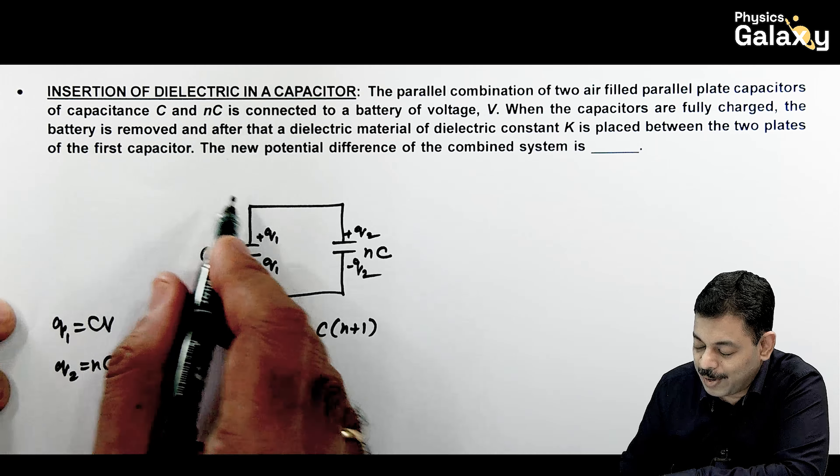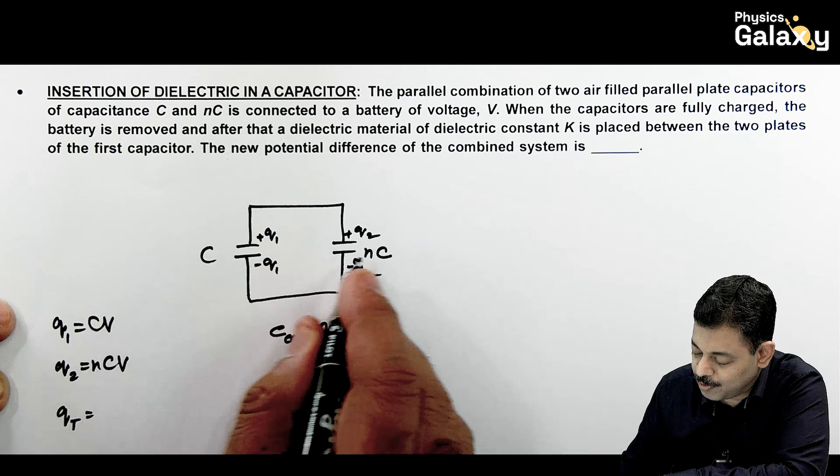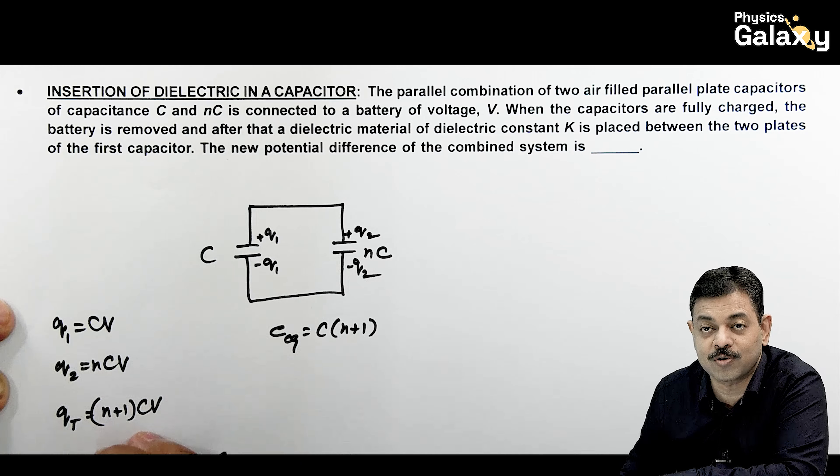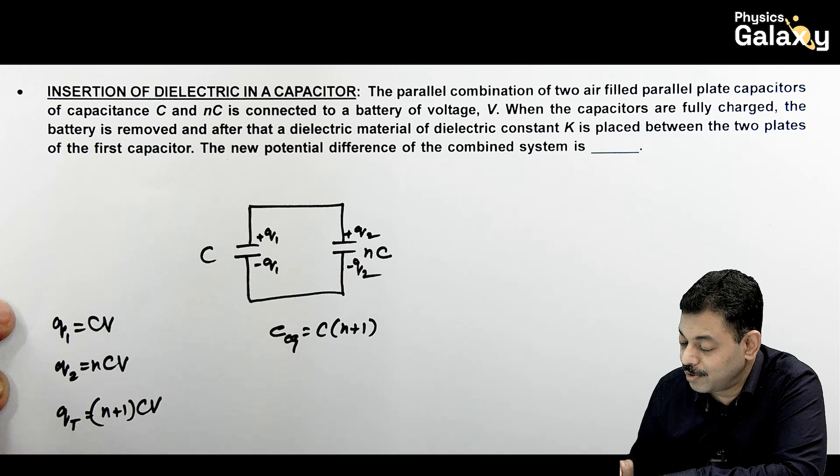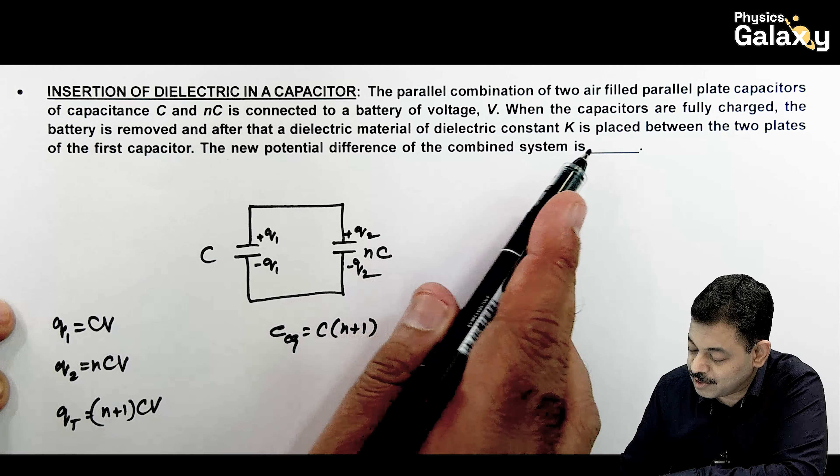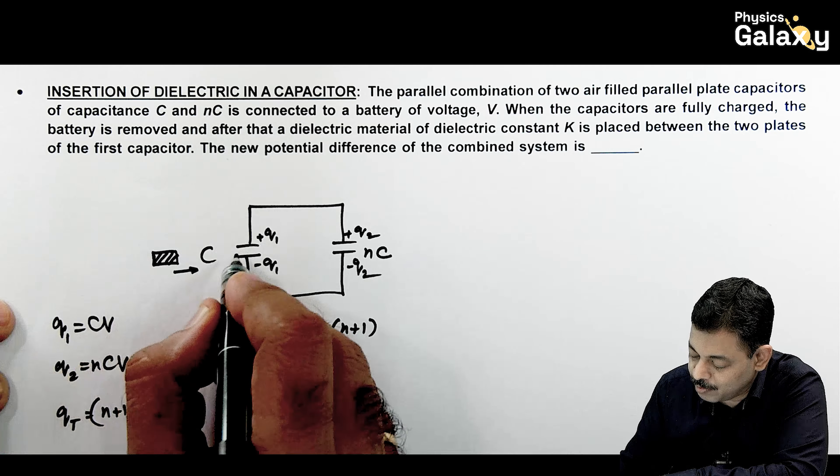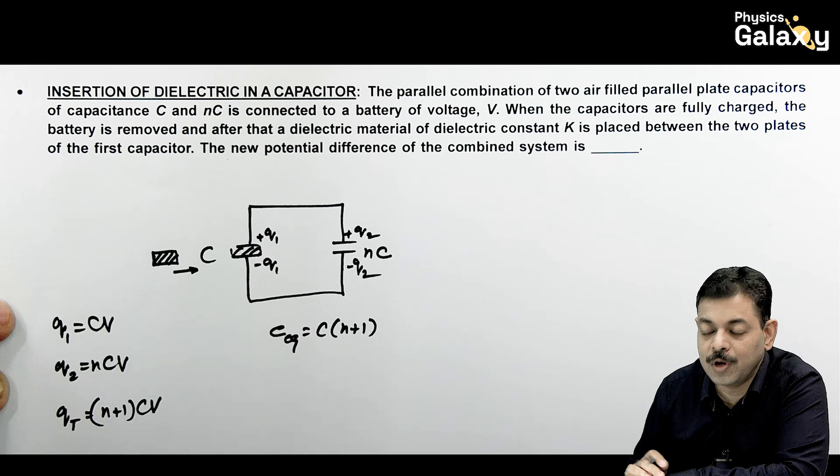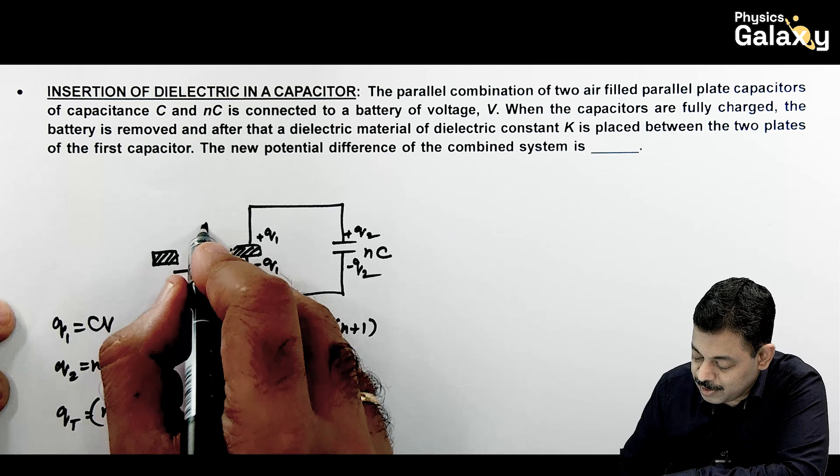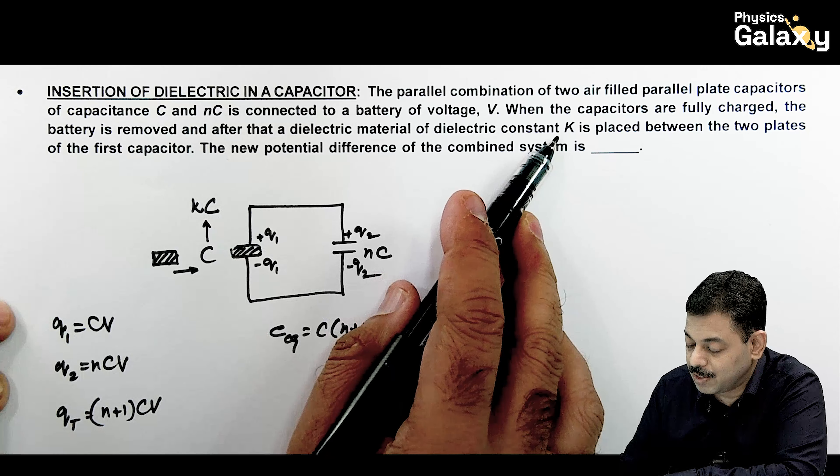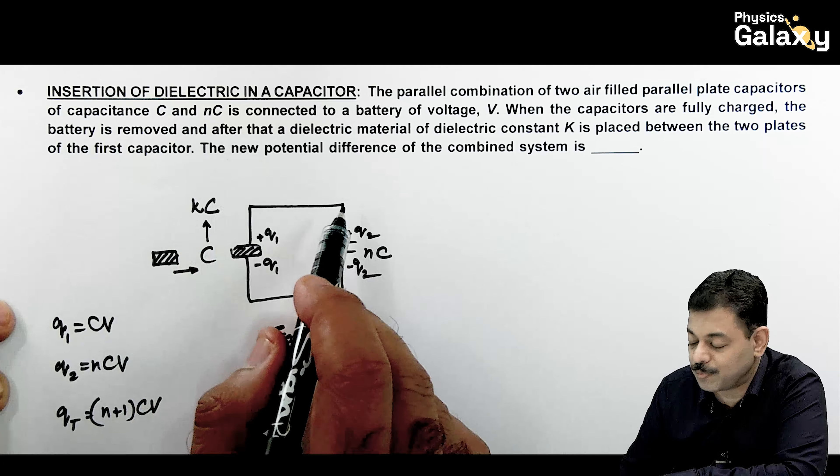Now, if the battery is removed, then the total charge on this system of parallel combination can be given as (N+1) times CV. Now the charge is fixed because the battery is removed. Now the question says that the dielectric is inserted between the two plates of the first capacitor. So this is the result of the new potential difference of the combined system.